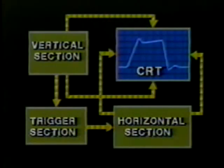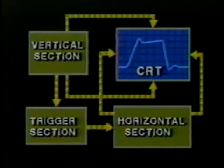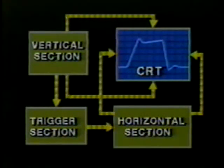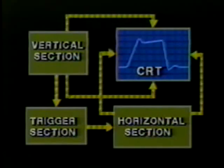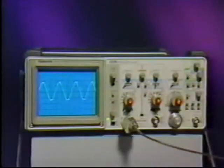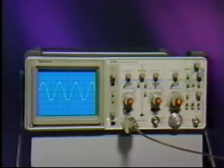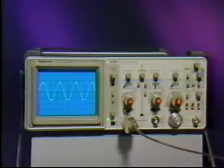We've taken you on a tour of the basic functional blocks of an oscilloscope. You should have a better understanding of these blocks and their interrelationships to the front panel controls. Whenever you operate an oscilloscope, remember the basic building blocks of the scope: the vertical, horizontal, and trigger sections. That way you'll be better equipped to match scope setup to your application needs.